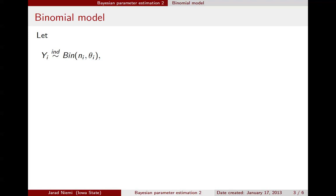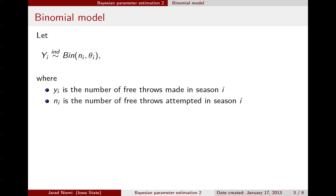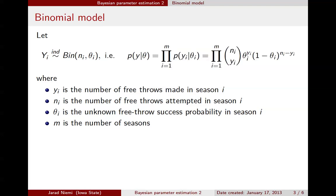We are going to be assuming a binomial model for our data, where i now is going to describe the year, or the season. So yi here is going to be the number of free throws made in season i, ni is going to be the number of free throws attempted in season i, and theta i is the unknown free throw success probability in season i.